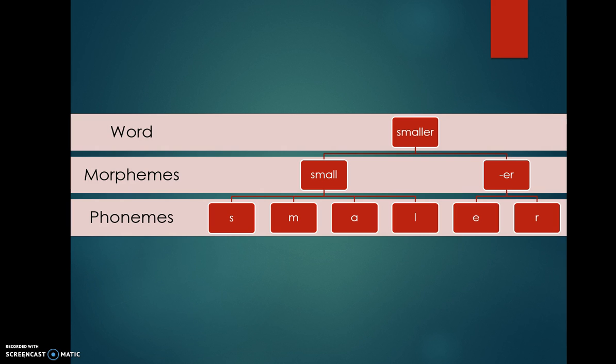So we notice that small, that first morpheme, that meaningful unit that means something on its own, is made up of these little parts: the S, the M, the AH, and the L, that on their own don't mean anything. The S sound doesn't mean anything. The M sound doesn't mean anything. They have to be used with the other sounds to mean something.